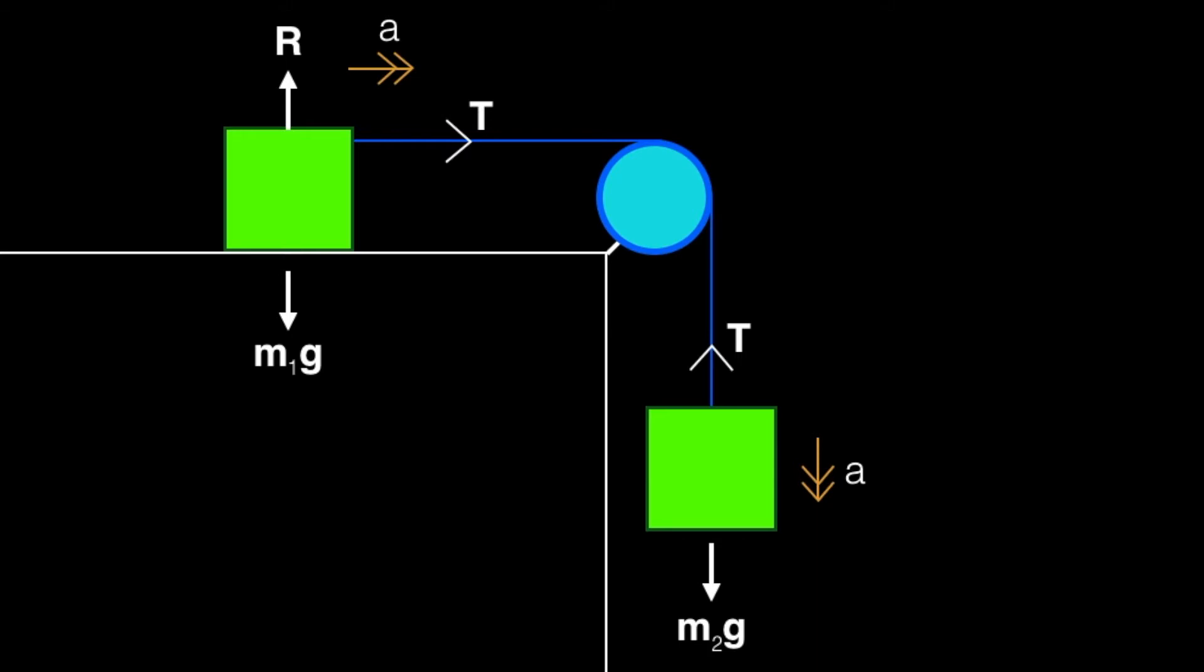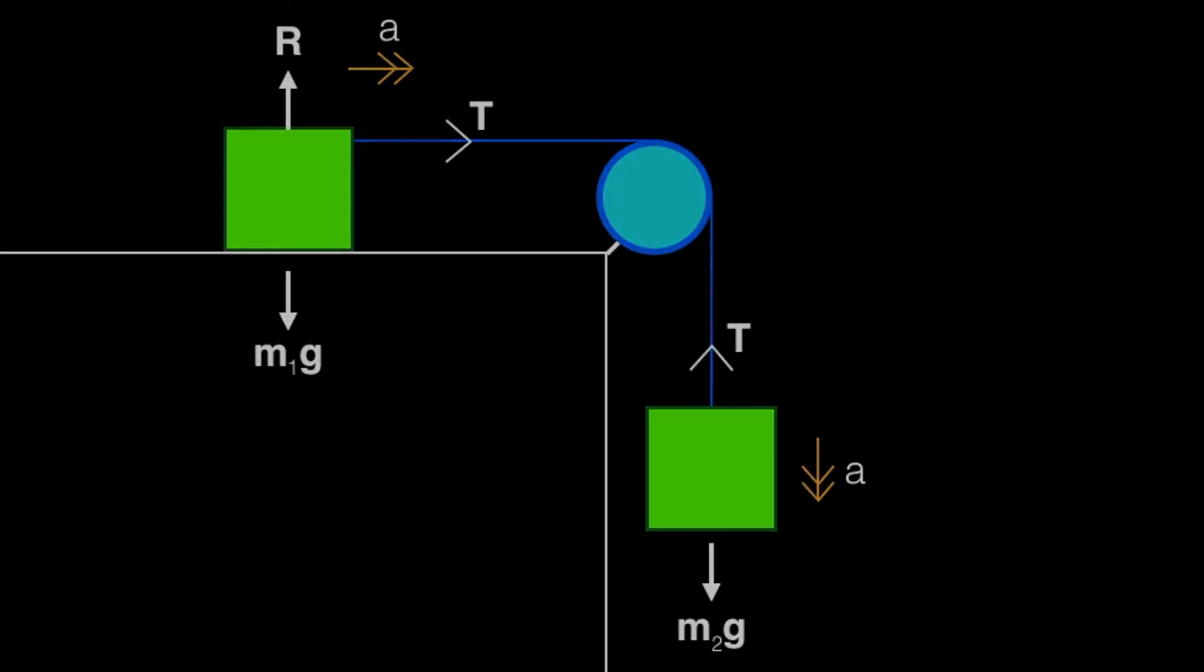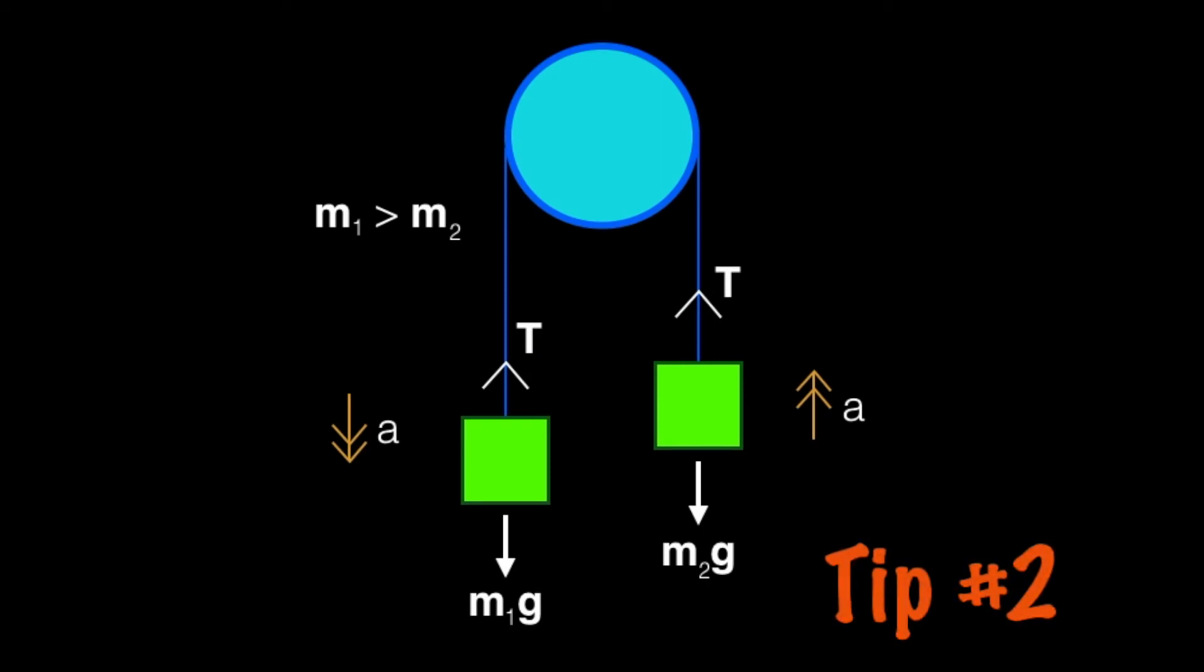My second tip is if you're told that the pulley is smooth and the string is inextensible, which is 99% of the time, then that means the tension in both ends of the string are going to be the same. And my last tip is that F equals ma is going to be your go-to equation for pulley questions.